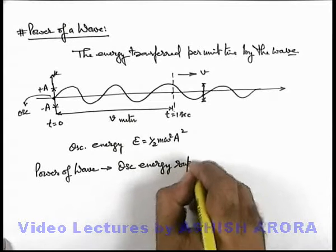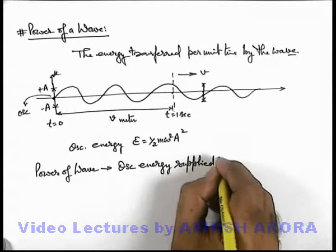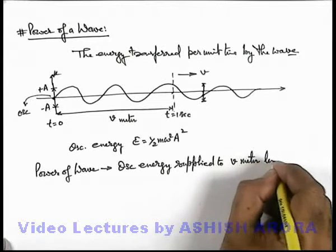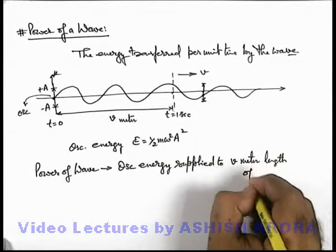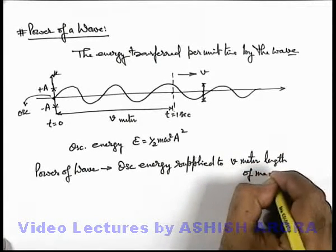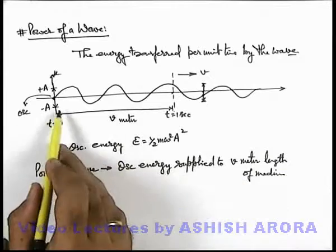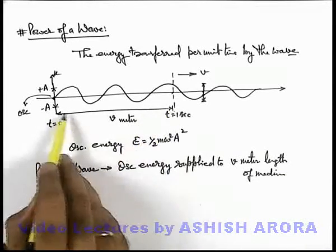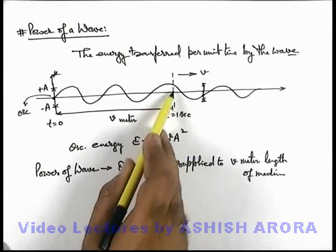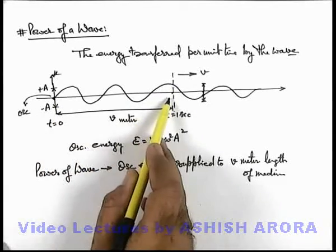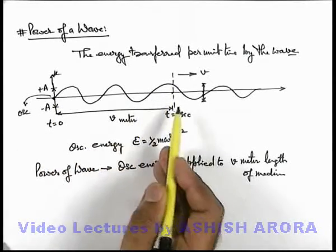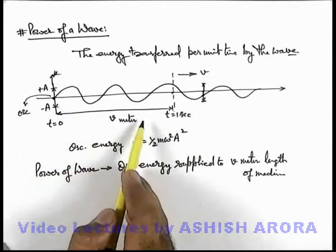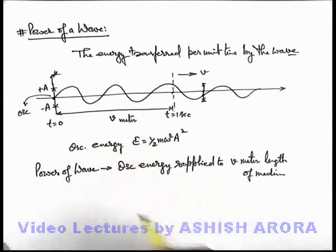supplied to v meters length of medium in 1 second. As the energy is supplied, it travels a distance of v meters — that means all medium particles oscillating in the v meter length will be carrying the total energy which is supplied in 1 second.